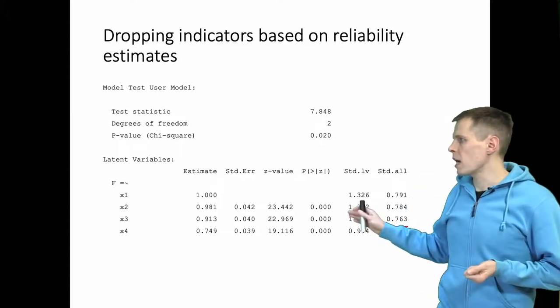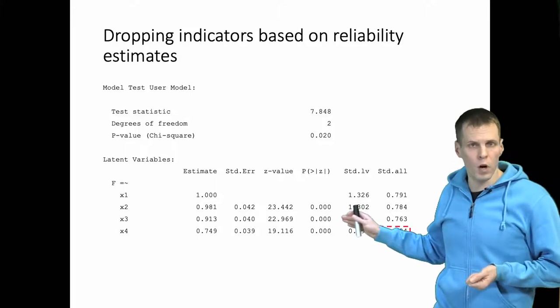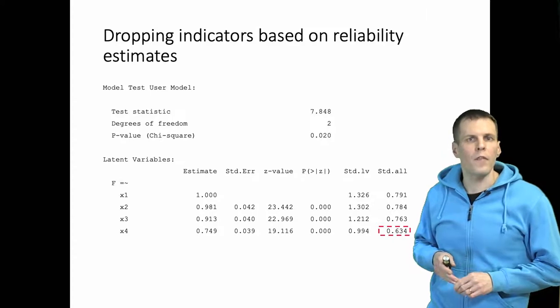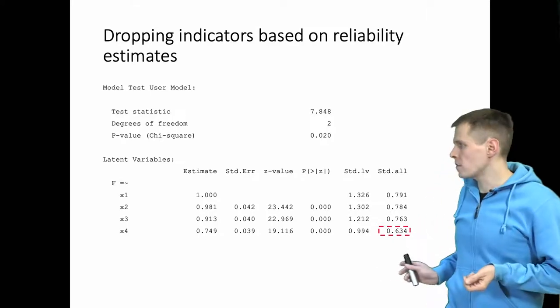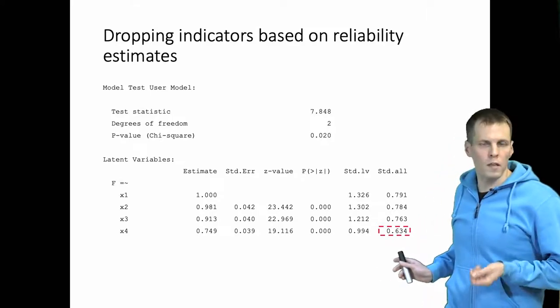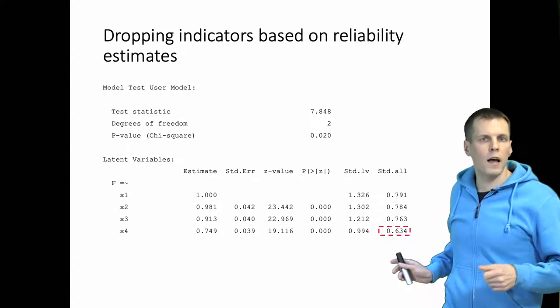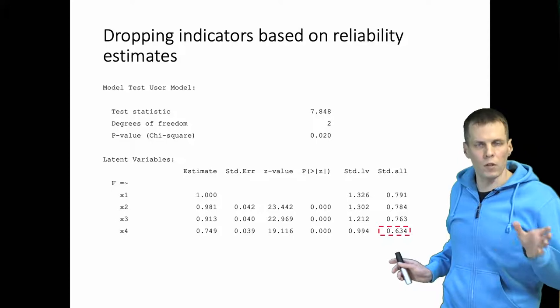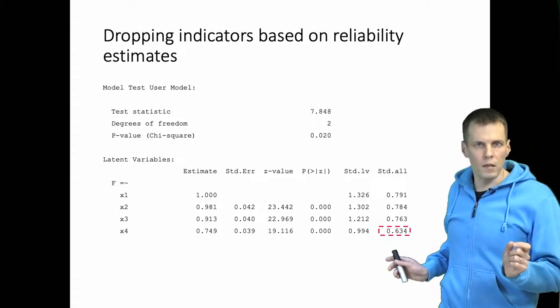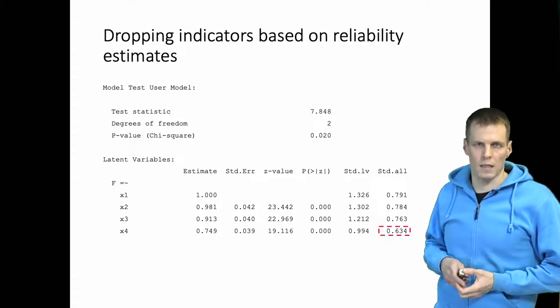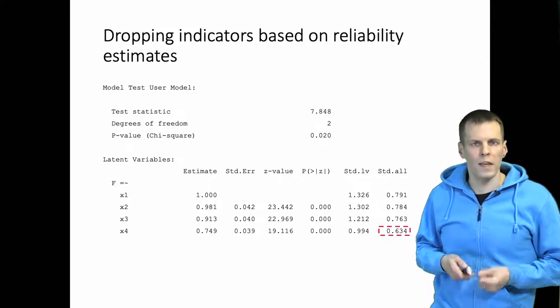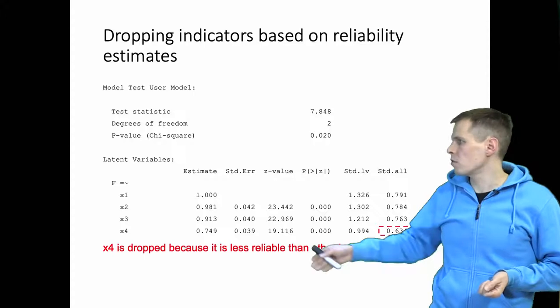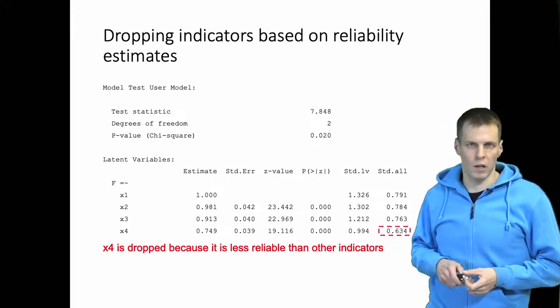Here we have a confirmatory factor analysis model with a single factor of four indicators x1 through x4. The results show that x4 has a lower loading than the other indicators, and the standardized loading of x4 is also below the 0.7 cutoff that some people use as an acceptable reliability. Quite often when faced with this kind of result, researchers drop the indicator because it is less reliable than other indicators.